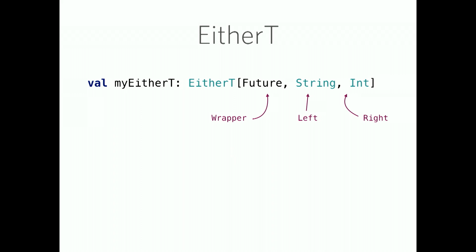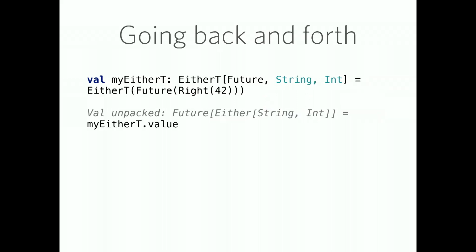So, here we have my either T. It's an either T where the wrapper is a future, our left is a string, and our right is an int. It looks fairly similar to what we've been seeing before. And we can unpack this. So, if we were to do my either T dot value, we actually get back that same type we've been seeing before. Future of an either of a string of an int. This also shows how you could create that. It's really just you take your future of your right and wrap that in an either T.